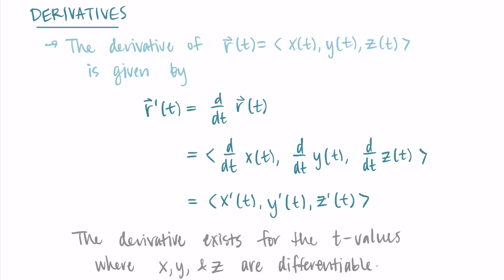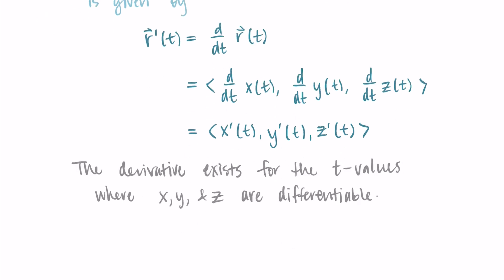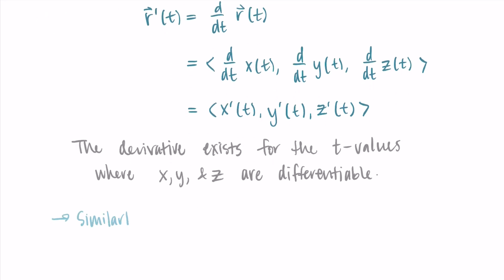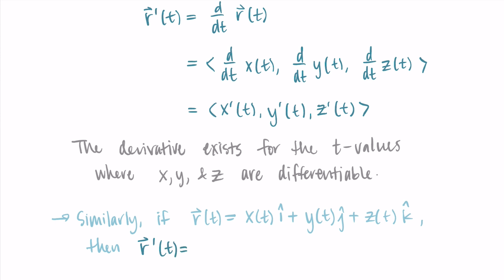I wrote this in vector form, but we can also use standard basis vectors i, j, and k. If we write r(t) = x(t)i + y(t)j + z(t)k, then r'(t) = x'(t)i + y'(t)j + z'(t)k — you take each component's derivative and keep it paired with i, j, or k. Choose whichever notation is more comfortable, but be able to move between the two.